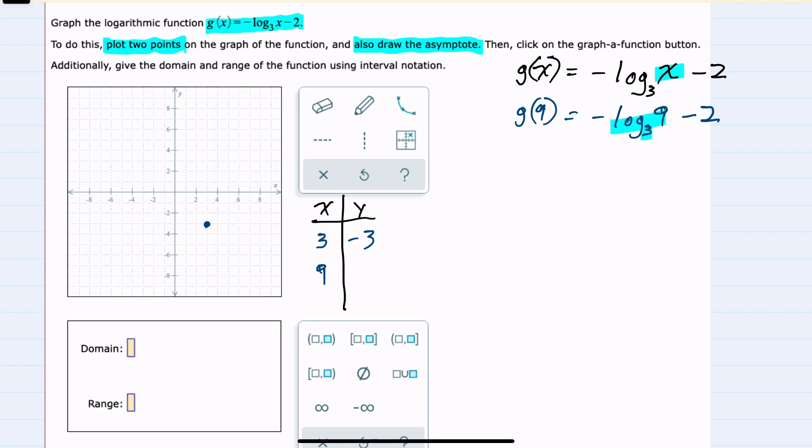Log base 3 of 9 says 3 raised to what power is 9? And with the negative on the outside, 3 squared is 9. So we have negative 2 minus 2, or negative 4, gives us the coordinate (9, -4).